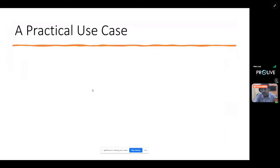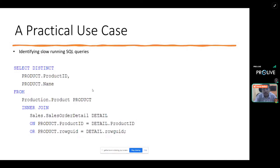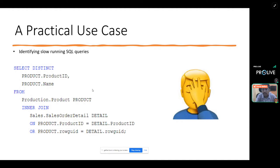Let's take a practical example. Suppose I need to identify slow-running SQL queries in a project. Consider a query performing an inner join on a product table and a sales order detail table with an OR condition on a particular column. Even if the columns were indexed, the OR condition itself would consume a lot of processing power, eventually resulting in a slow-running query.